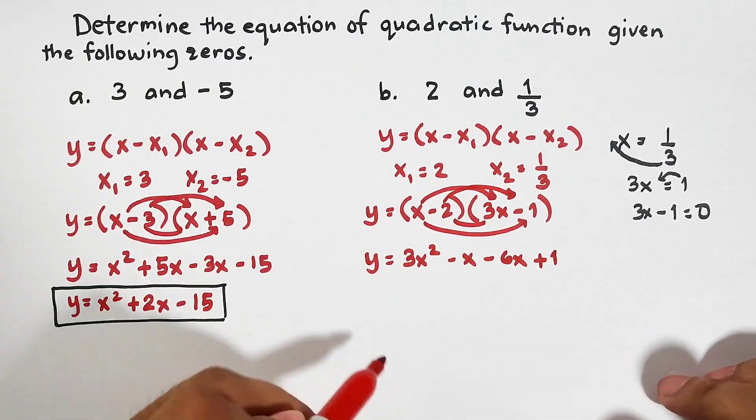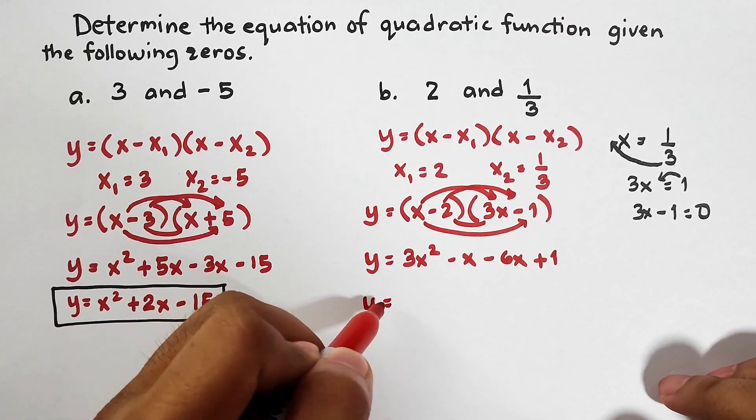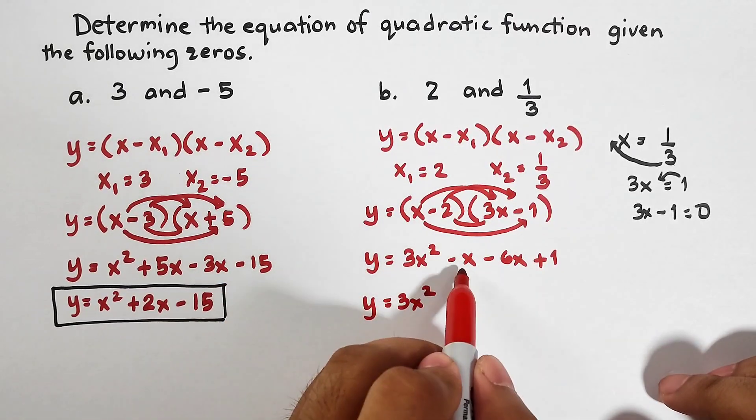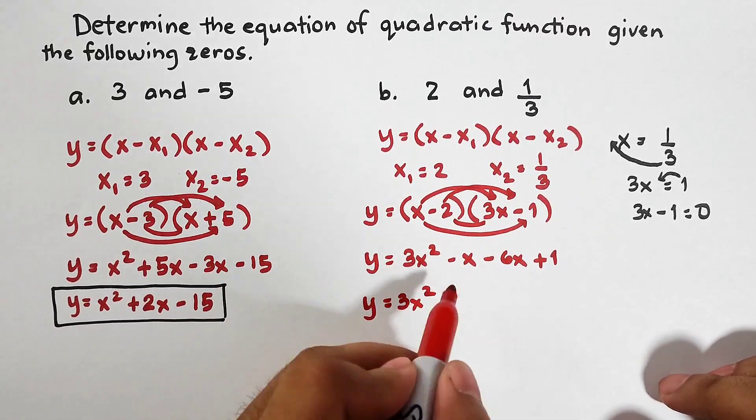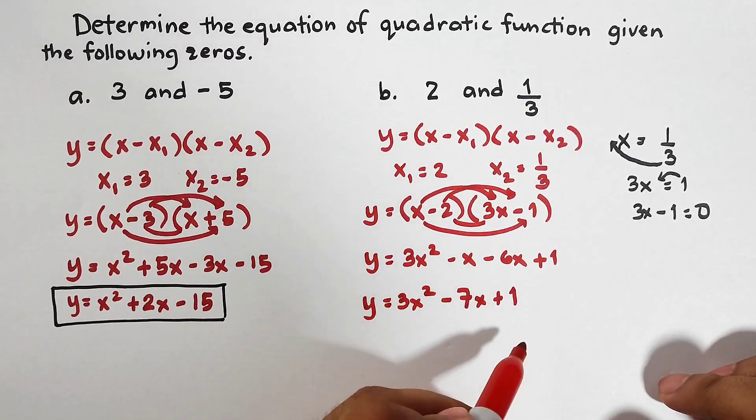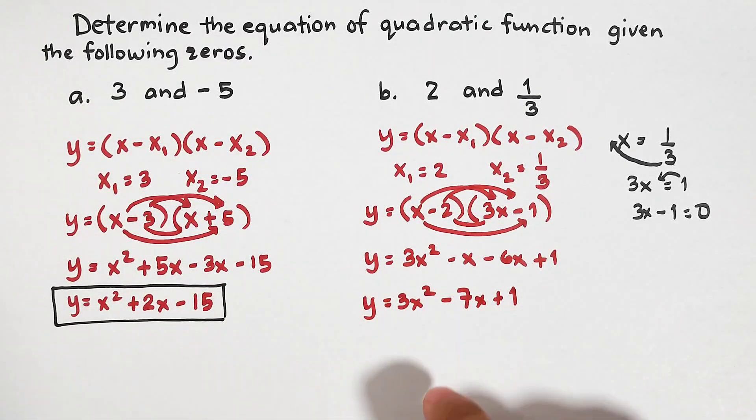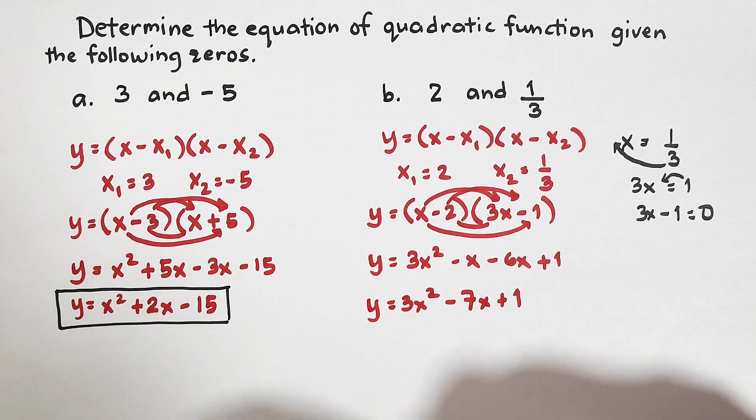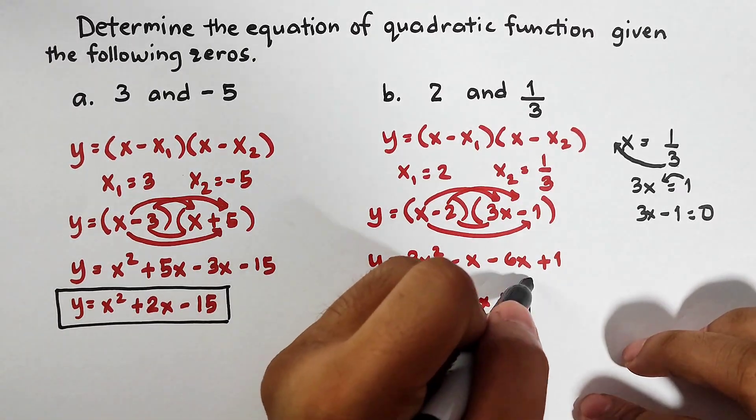Combine the middle terms. You have your y is equal to 3x square. Negative x minus 6x, that is minus 7x, then plus 1. And as you can see, this is now the answer for item number 2.